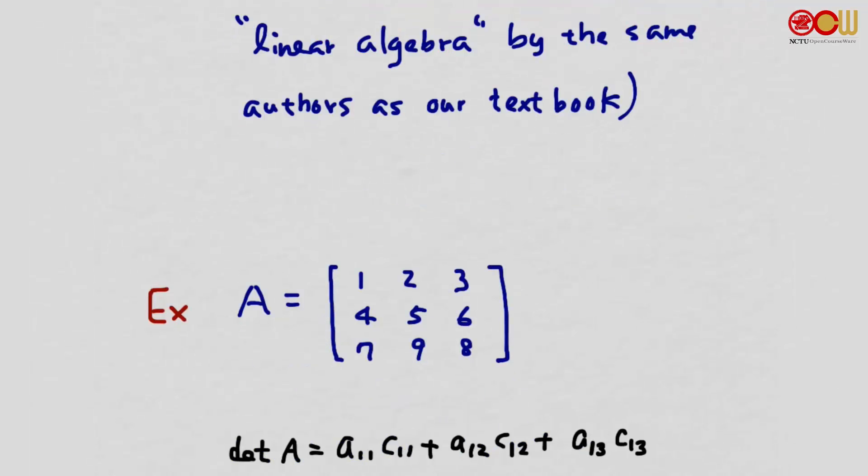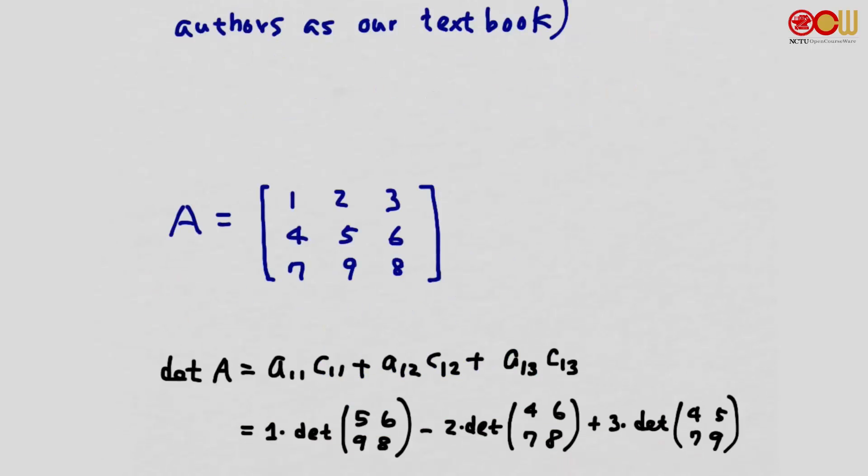As an example, let's consider this A matrix and compute det A by cofactor expansion along the first row. We have A11 C11 plus A12 C12 plus A13 C13. A11 is 1, A12 is 2, A13 is 3.